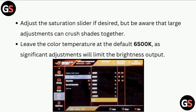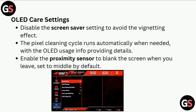Leave the color temperature at the default 6500K, as significant adjustments will limit the brightness output. For OLED care settings, disable the screen saver setting to avoid the vignetting effect. The pixel cleaning cycle runs automatically when needed, with the OLED usage info providing details.